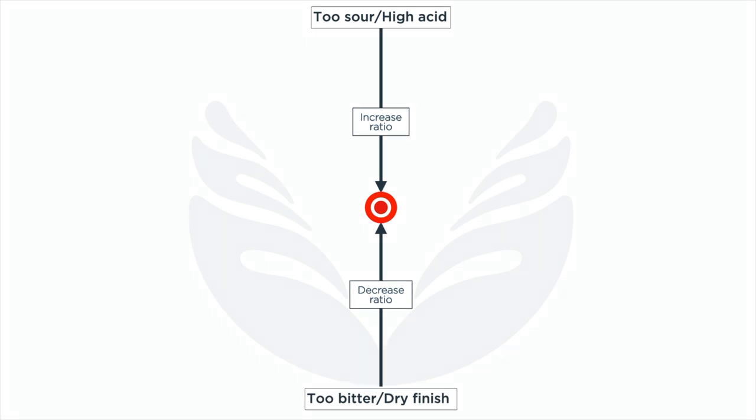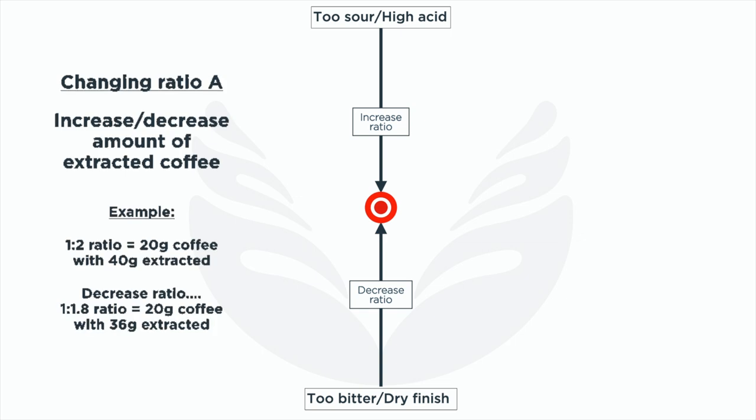There are a couple of different ways to increase or decrease your ratio. One is to keep the dose of coffee static and simply put more or less water through those coffee grinds. This is the most common way to change the ratio.